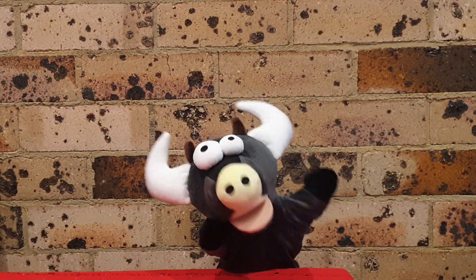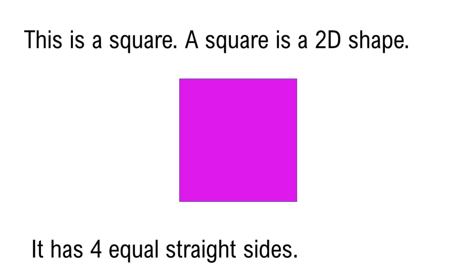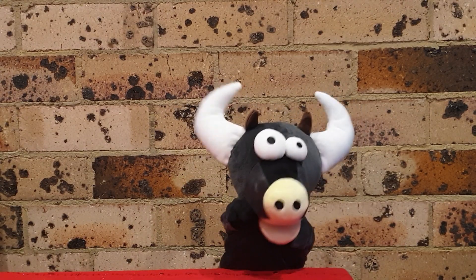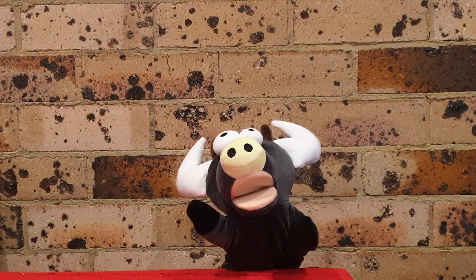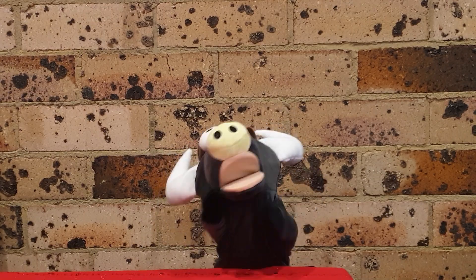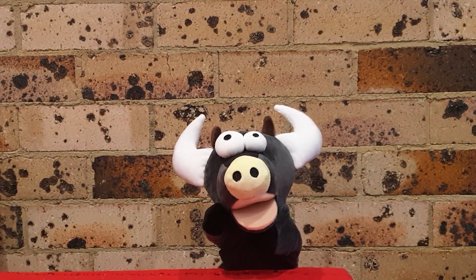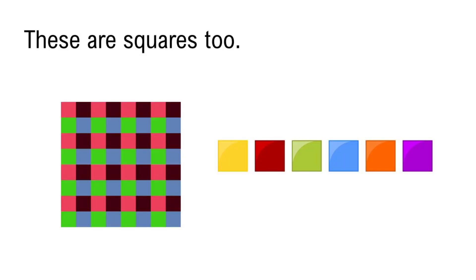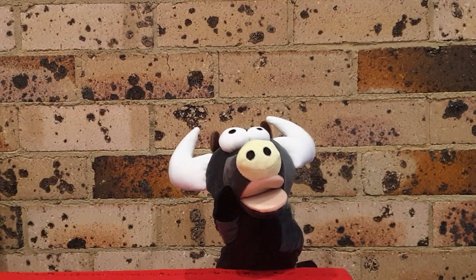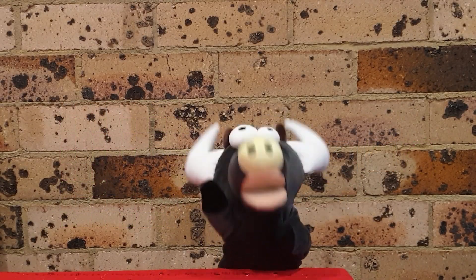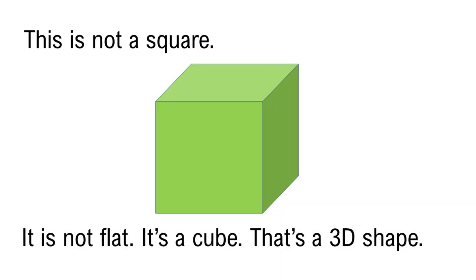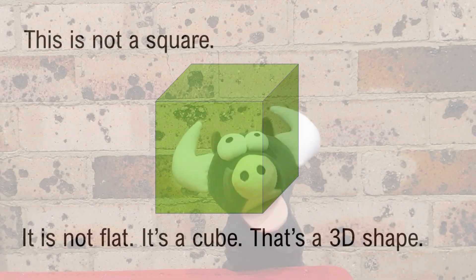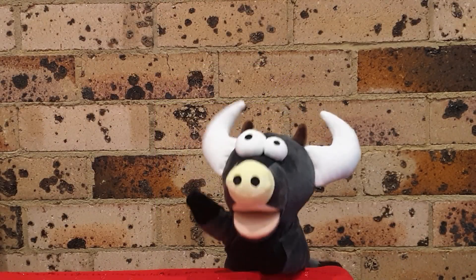This is a square. A square is a 2D shape. It has four equal straight sides. These are squares too. This is not a square. It is not flat. It is a cube — that is a 3D shape.